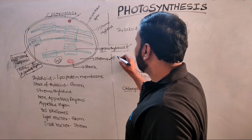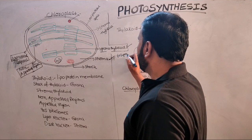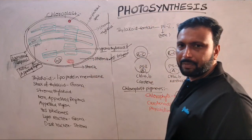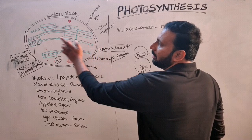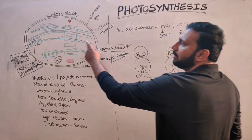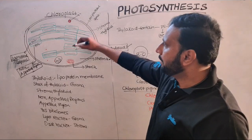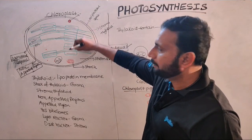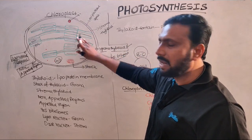In the stroma, photosynthetic enzymes are present. In the stroma, lipoprotein membranes are also there, extending from one end to another end. They are called thylakoids. At some places the thylakoids are present one above the other; a stack of thylakoids is called grana.